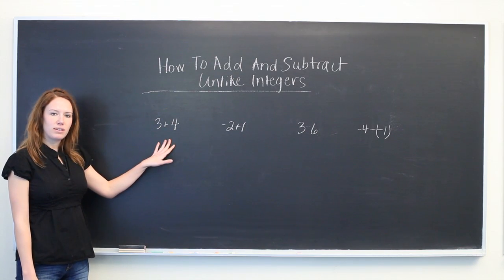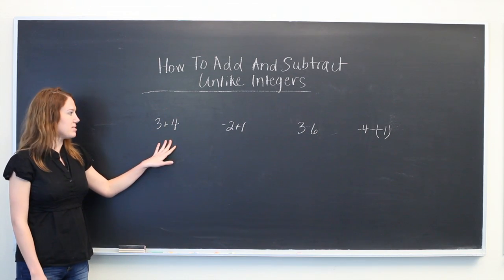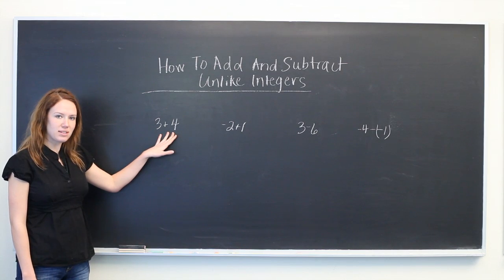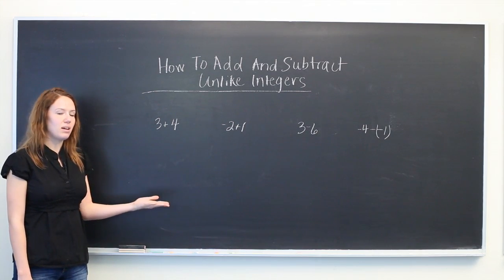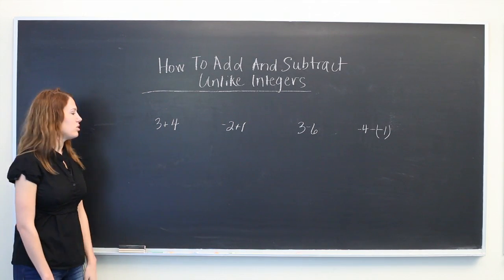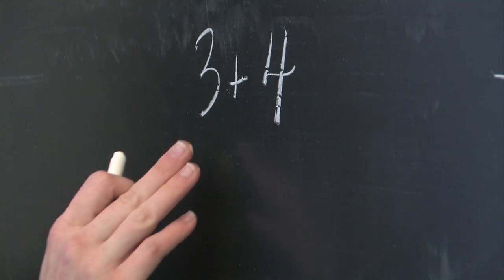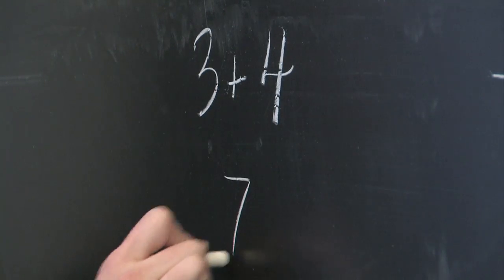3+4 is more basic because both of these integers are positive, so you can just add them together as if you were adding natural or counting numbers. We know that 3+4 is 7.